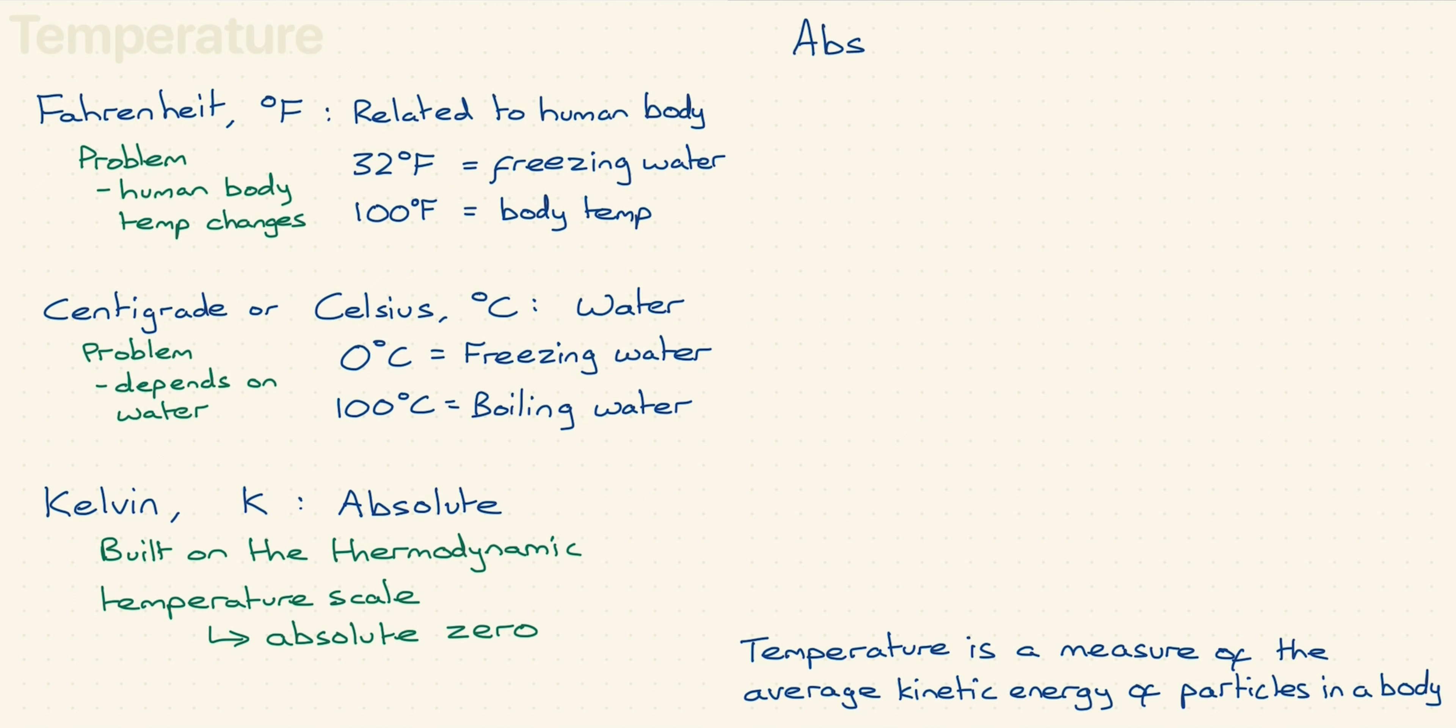Absolute zero is often thought of as the temperature when everything stops moving, but that's not quite true. Remember, we are interested in three types of kinetic energy: translational, vibrational, and rotational.